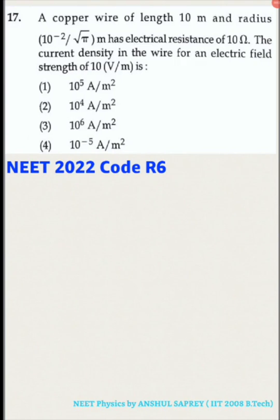Question says a copper wire of length 10 meter and radius 10 raised to minus 2 divided by root pi meter has electrical resistance of 10 ohm. The current density in the wire for an electric field strength of 10 volt per meter is.